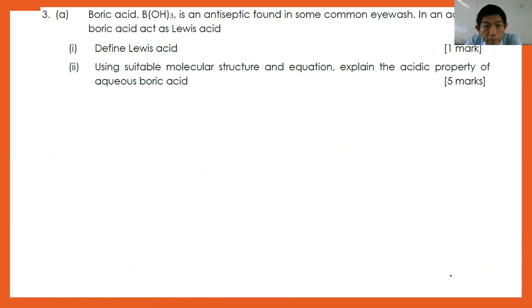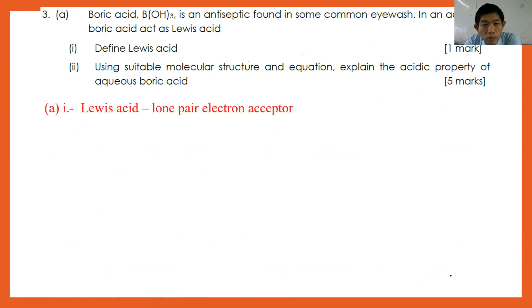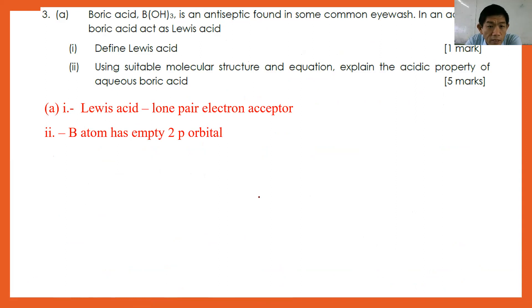Question three: boric acid B(OH)3 is an antiseptic found in some common eyewashes. In solution, boric acid acts as a Lewis acid. Define Lewis acid, and using suitable molecular structure and equation, explain the acidic properties of boric acid. A Lewis acid is a lone-pair electron acceptor. Since the boron atom has an empty 2p orbital, it can accept electron pairs from a donor.